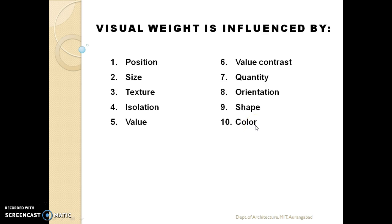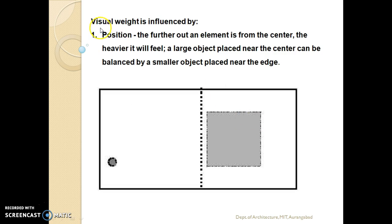Visual weight is influenced by position. The further out an element is from the center, the heavier it will feel. A large object placed near the center can be balanced by a smaller object placed near the edge, as you can see in this figure: a larger object near the center balanced by a smaller object near the edge.